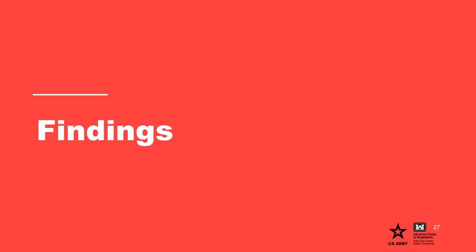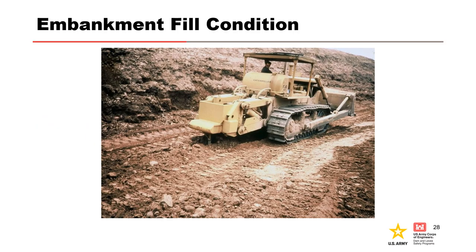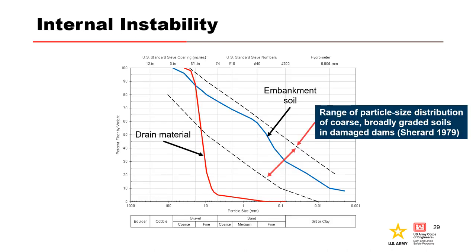The embankment fill was found to be near optimum water content and well compacted; a ripper was required to assist the excavation for the quick breach. During the investigation, it was found that the embankment fill was internally unstable, with fines and fine sands washing out of the embankment and leaving coarse sand and gravel behind. The embankment soils fall within Sherrard's bands of gradation envelopes of unstable broadly graded soils.